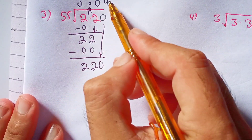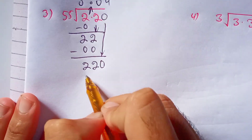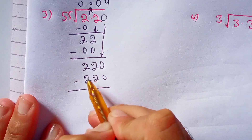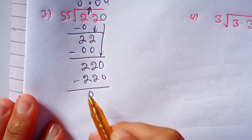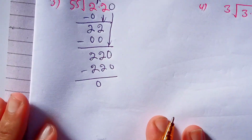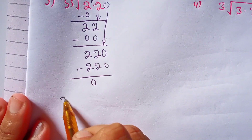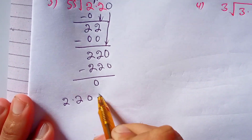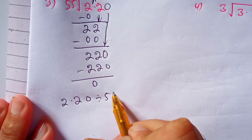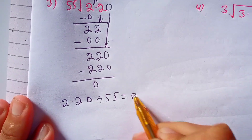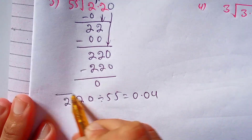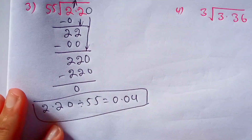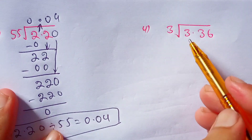55 times 4 is 220. Subtract 220 from 220, the remainder is 0. So we can say that 2.20 divided by 55 is equal to 0.04. Now in this question we have to divide 3.36 by 3.